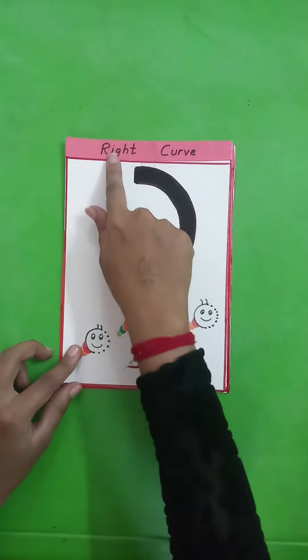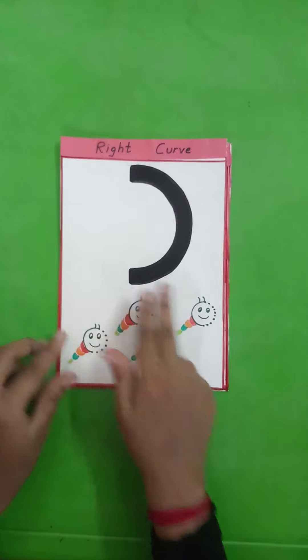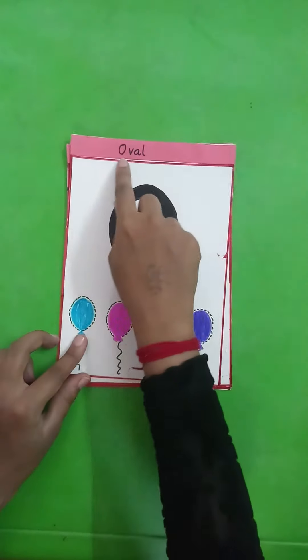Right curve. This goes from the right side. Oval, make an oval.